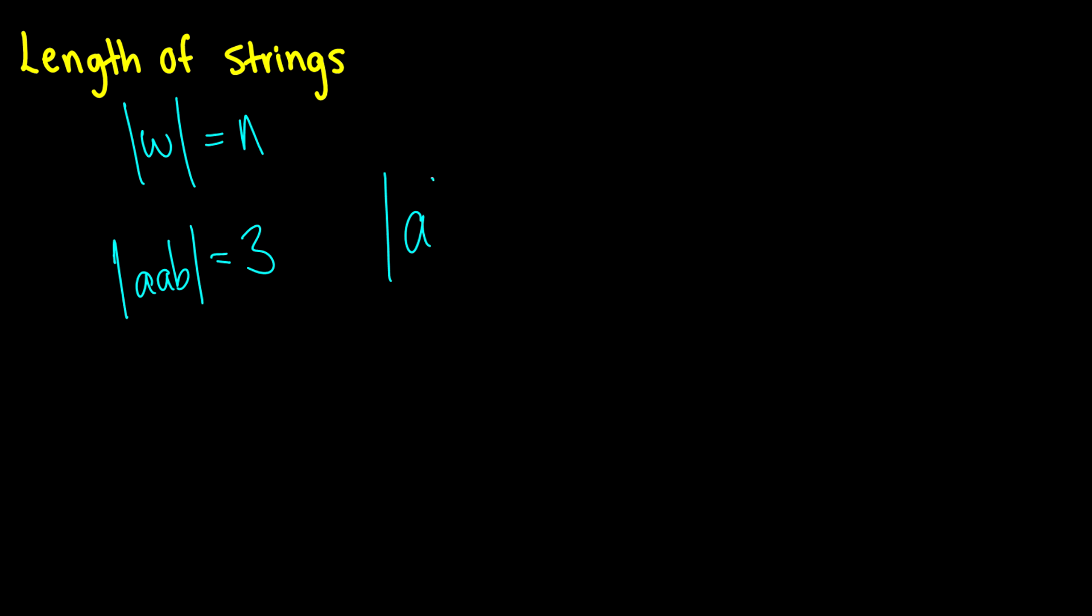If we have a, b, a, again it equals three. So pretty simple. What you should know is that the length of the character lambda is zero. So if I had, as a trick question, a lambda b lambda lambda, what is the length of the string? Well it's two. So a little bit tricky, but that's basically length of strings.